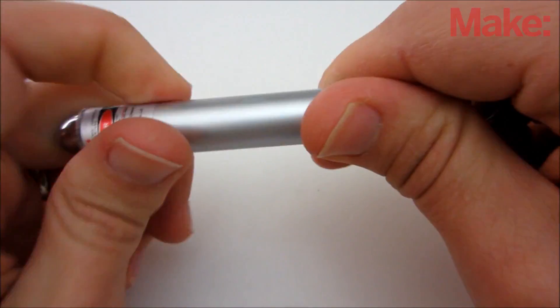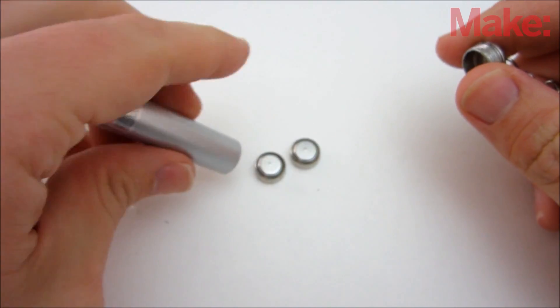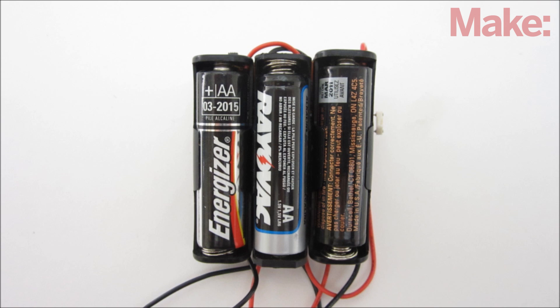If you find that the laser pointer's battery life is too short, you can remove the three button cell batteries and instead power it with the three AA batteries on the alarm circuit.